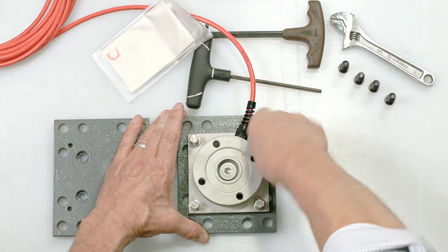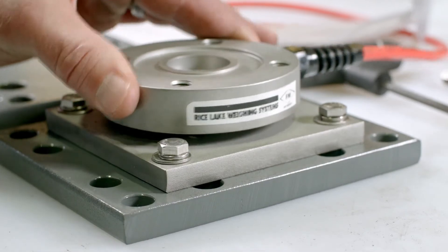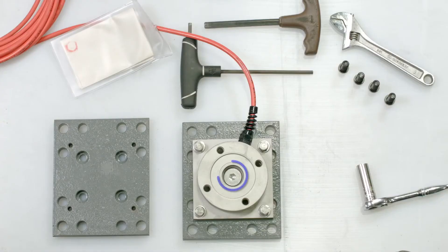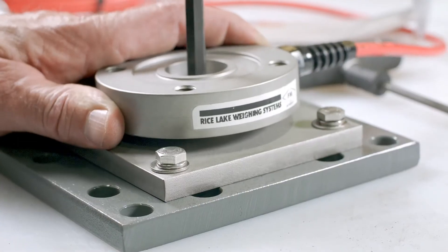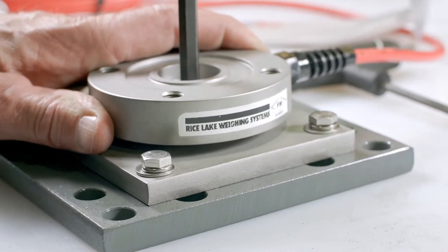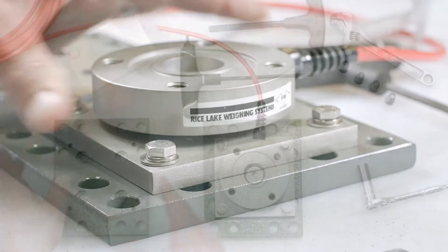Once tightened, check to see if the cell unit is loose. If so, adjust with the center bolt on top of the cell. This may require some force as Loctite has been used on the bolt. Tighten until the cell no longer wiggles.